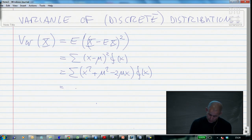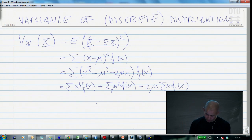We can go to the individual terms: sum of x squared f of x, plus sum of mu squared f of x, minus two mu sum of x f of x. This is just multiplying into the parentheses.